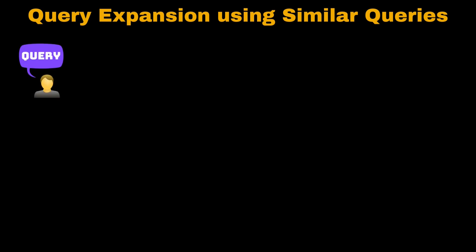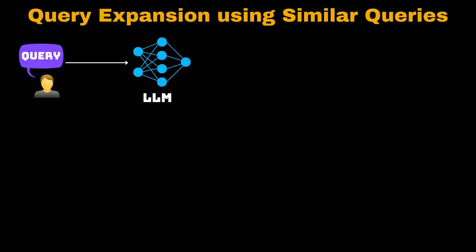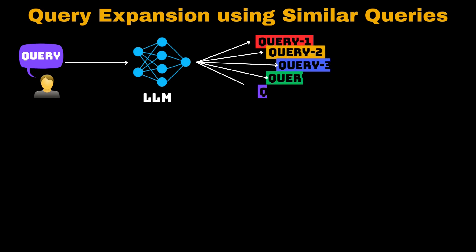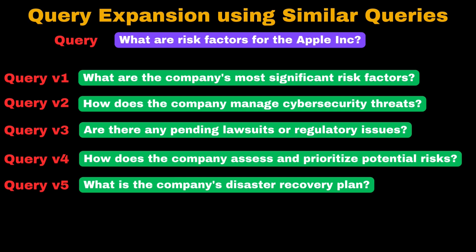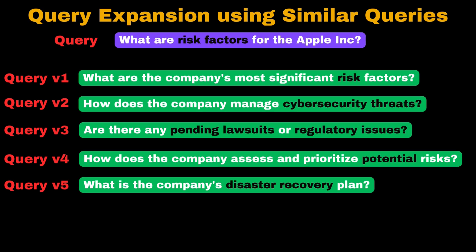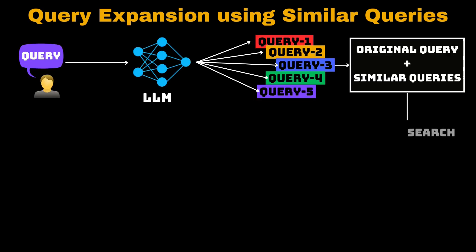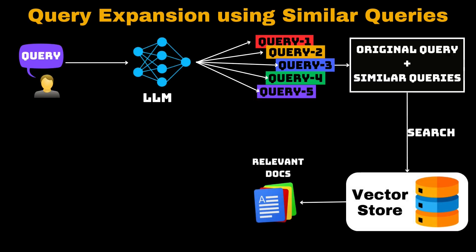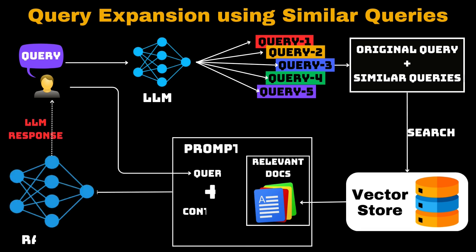For the second approach, query expansion zero-shot prompts an instruction-tuned LLM to generate queries similar to the user query, which captures essential keywords and textual patterns. Then the original query along with these generated queries is used to search for matching documents in the vector store. These retrieved documents can then be used in a downstream pipeline like RAG.